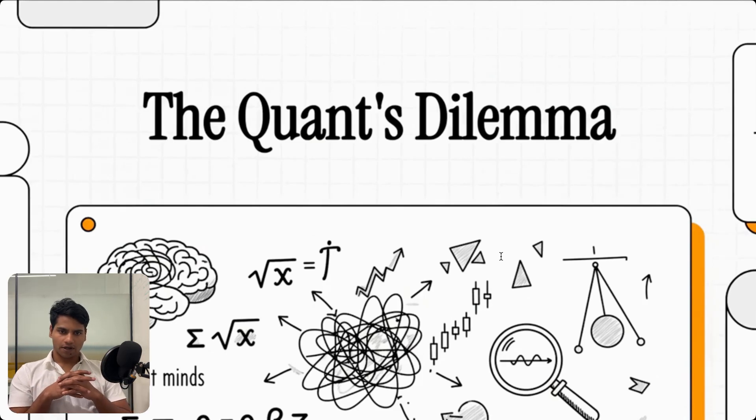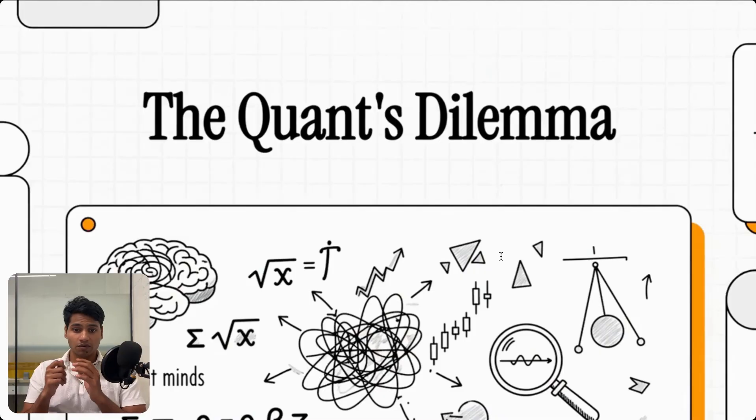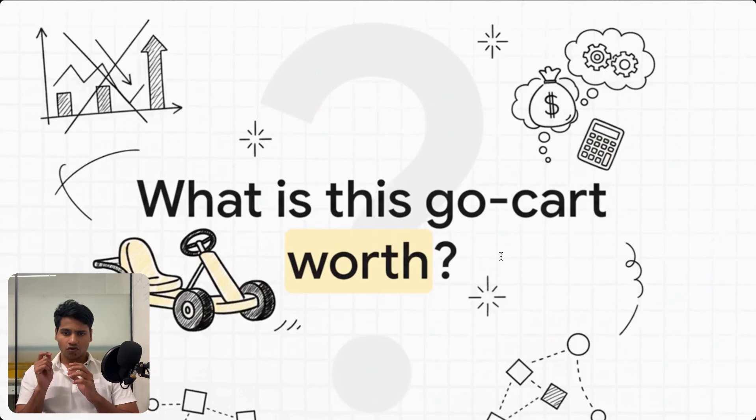Let's dive into the world of quantitative finance. This is a place where actual physicists and mathematicians, some of the smartest people on the planet, try to use pure maths to predict the totally unpredictable chaos of the financial markets. But what happens when the maths itself is the problem?